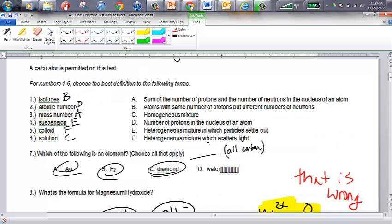All of these are an element. The reason diamond is an element is because diamonds are all made up of completely carbon. Water is not an element.